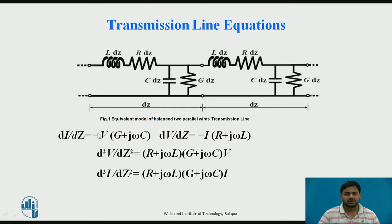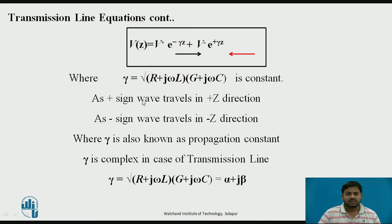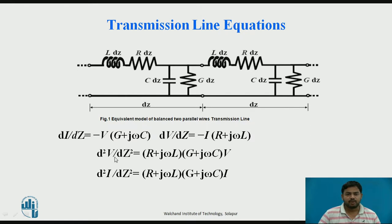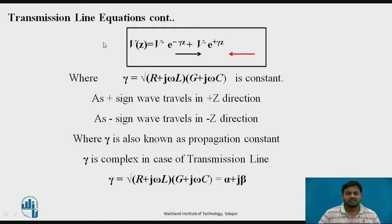These are the equations of the transmission line. By differentiating these two equations — the voltage and current equations — we obtain the double differential equations of the transmission line. After solving these two equations, d²V/dz² as a function of V, and similarly for the current equation, solving the voltage differential equation gives V as a function of z. As you can see, there are two components in this wave.